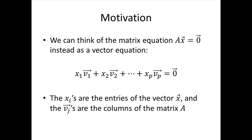We can instead think of that matrix equation as a vector equation: x1 times v1 plus x2 times v2 plus, and so on, plus xp times vp equals the 0 vector. Here the xi's are the actual entries of the vector x, and the v's are the columns of the matrix A.